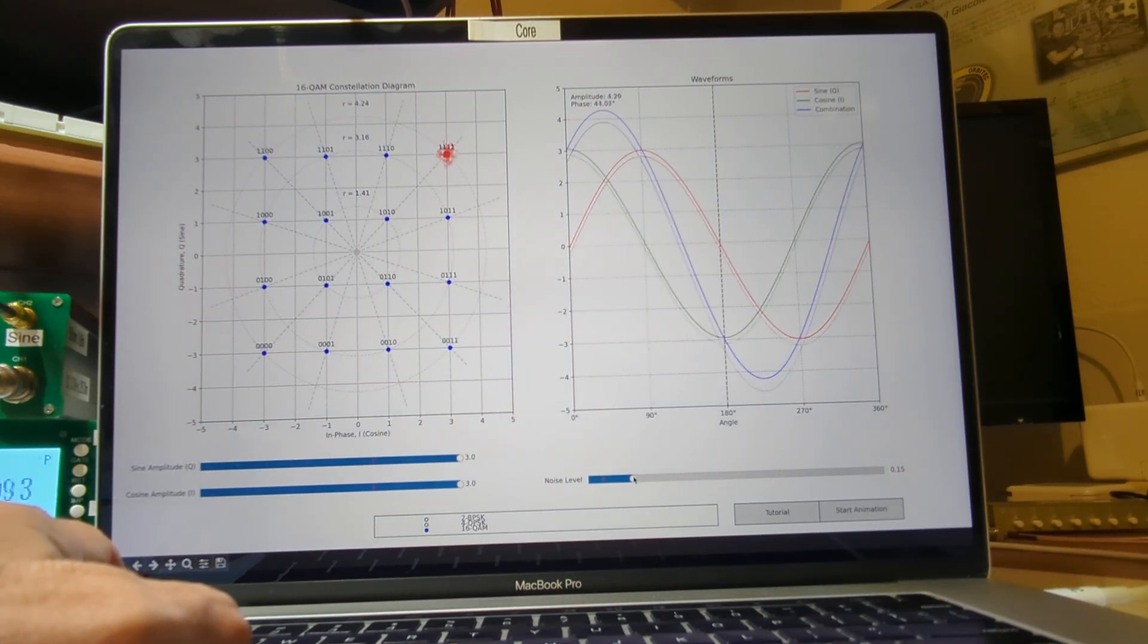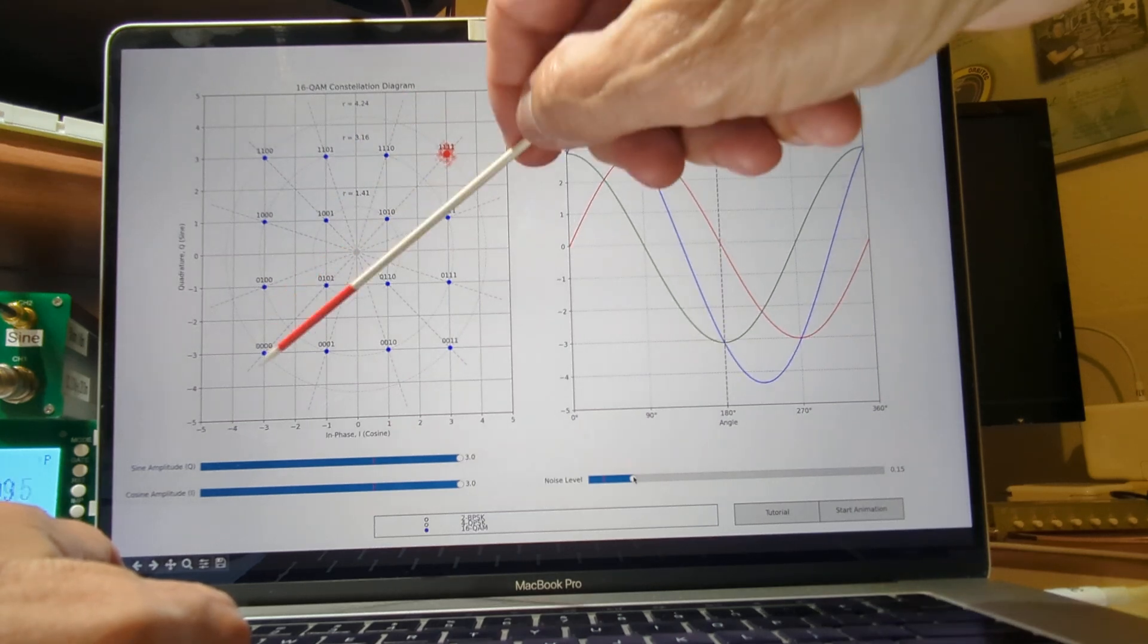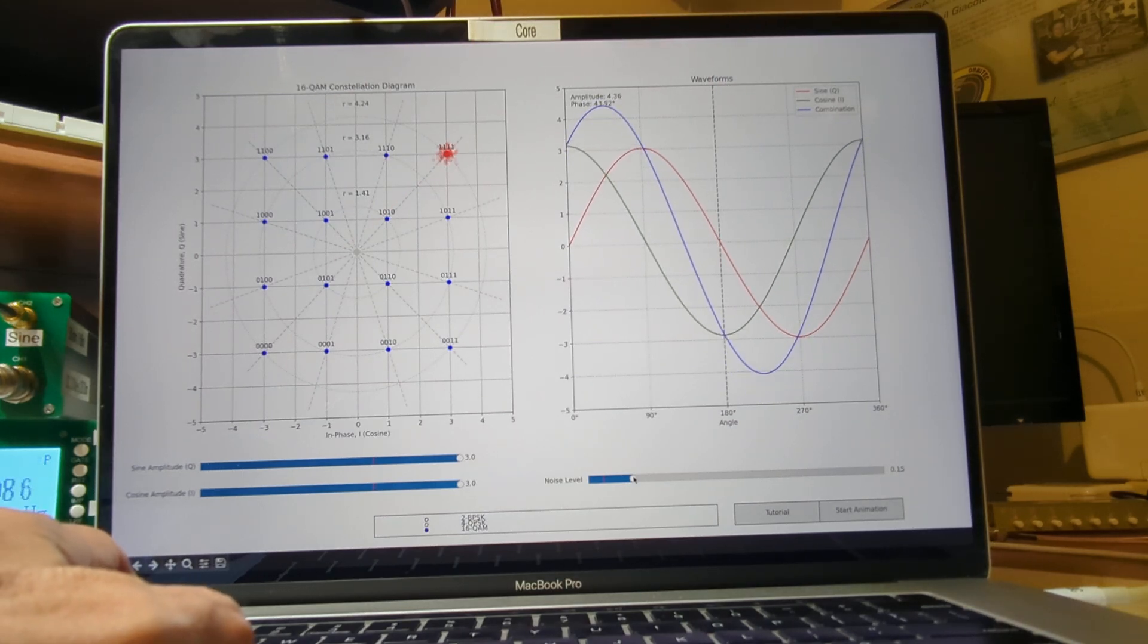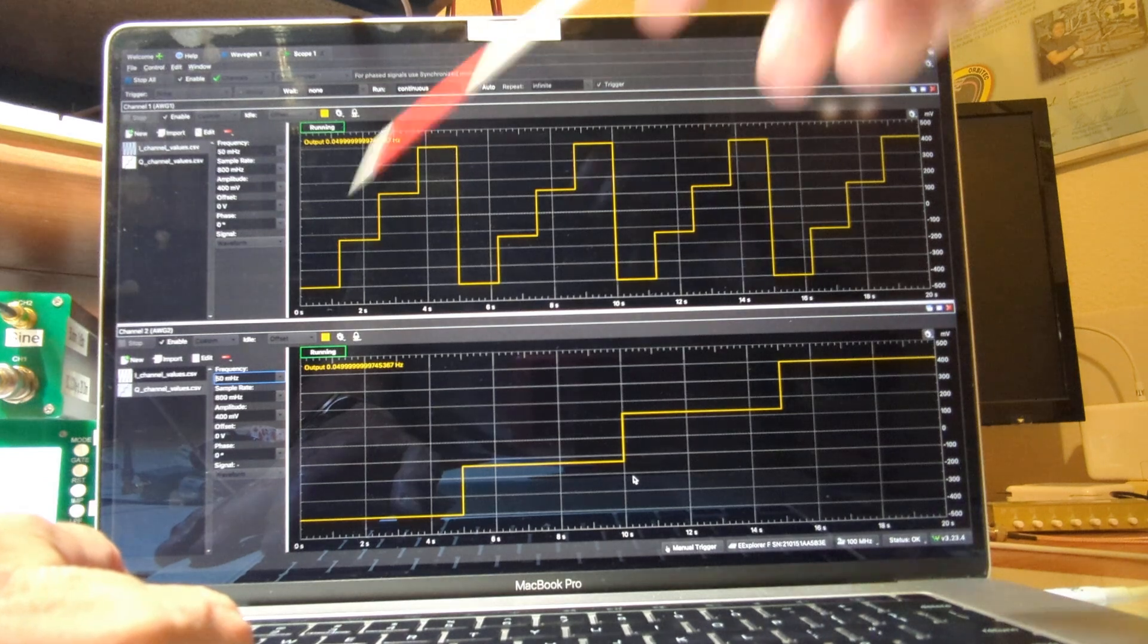So I'm not doing the mapping from any particular bitstream, but in this particular case in the hardware, I'm just exercising the hardware to go through all the 16 steps, which are possible in the 16 QAM constellation diagram. So that's what this is doing.